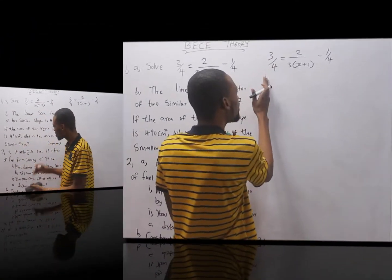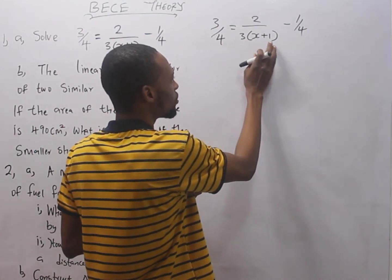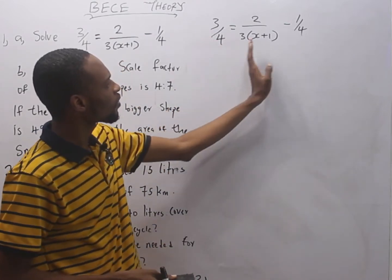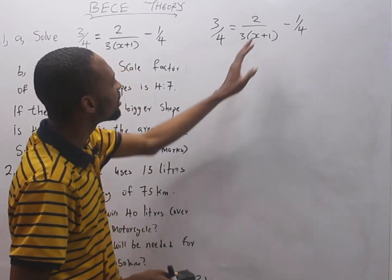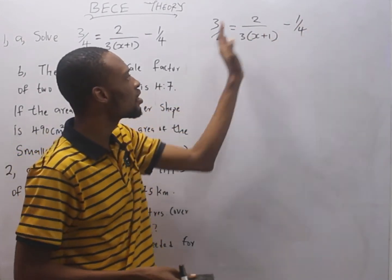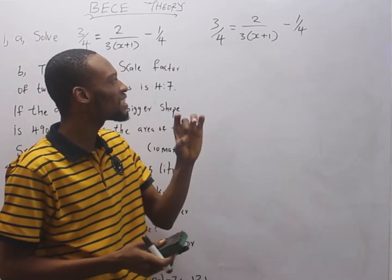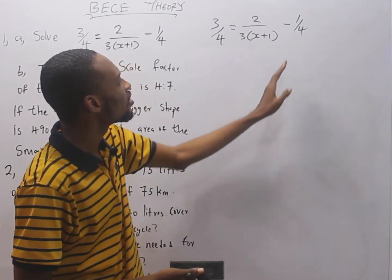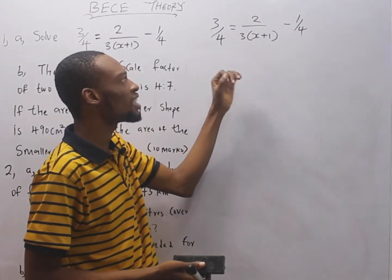Read it step by step. We have 3 over 4 equals 2 all over them 3s plus 1 minus 1 over 4. This is a fraction. This is a fraction. This is a fraction. Now, in this, the denominator has s. This, there is no s. This, there is no s.